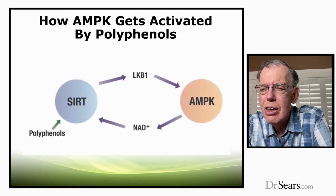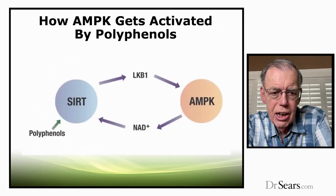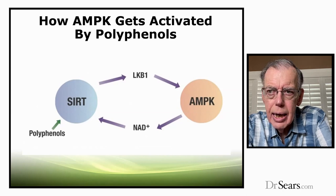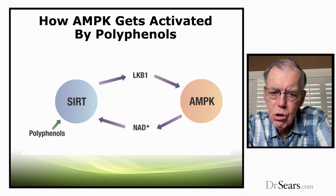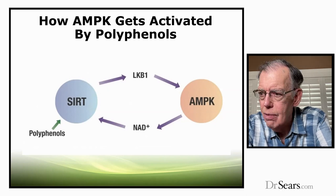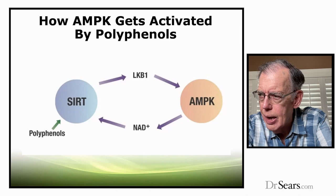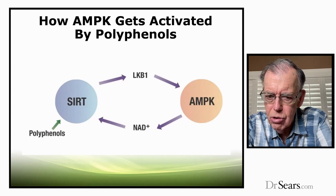To use polyphenols correctly, you'd need to be consuming them throughout the day at adequate levels. With a little science: polyphenols activate a gene transcription factor called sirtuin, which goes through a series of reactions that activates AMPK. And this activation of AMPK gives rise to reduction of insulin resistance.